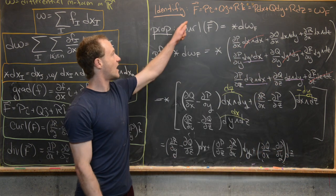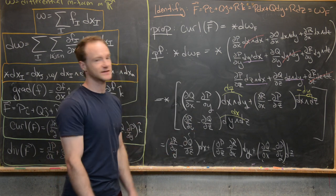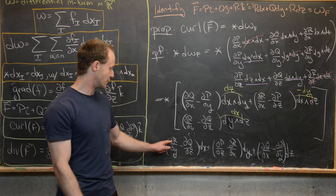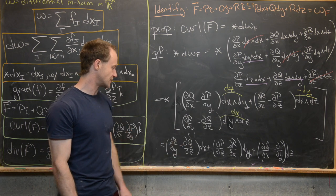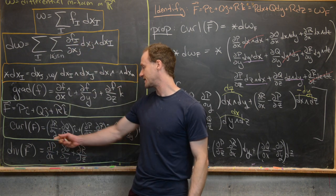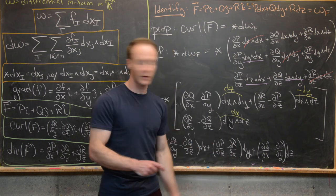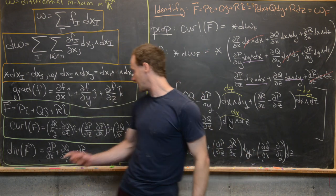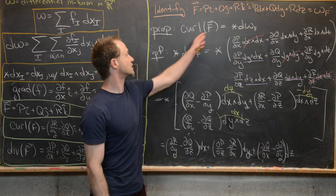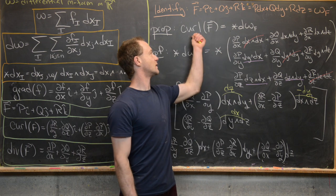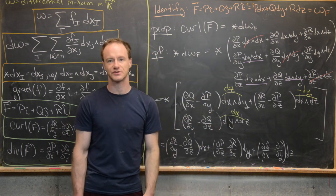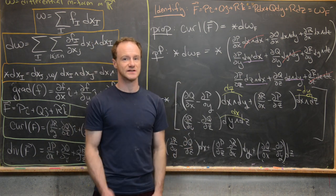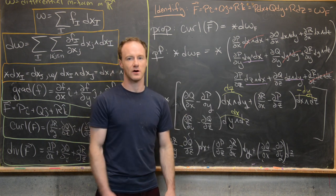Checking against the curl: for the dx component (the î component), we have ∂R/∂y − ∂Q/∂z — exactly the curl's î component. For the dy component, we get exactly the ĵ component. And for the dz component, we get exactly the k̂ component. We've affirmed the relationship: curl F = ★(d ω_F), relating the curl to the exterior derivative and Hodge operator.